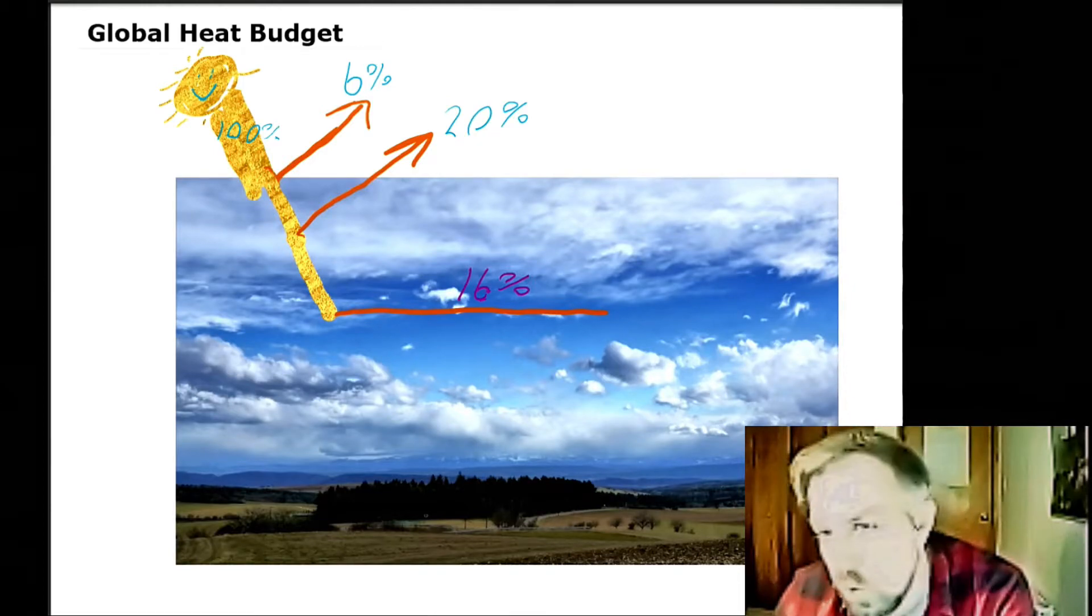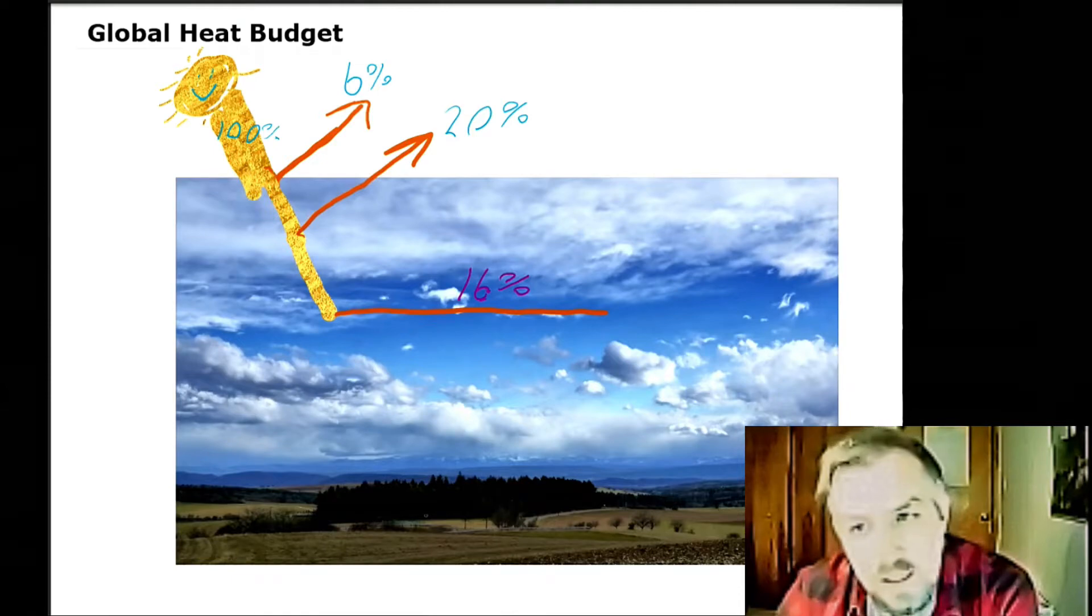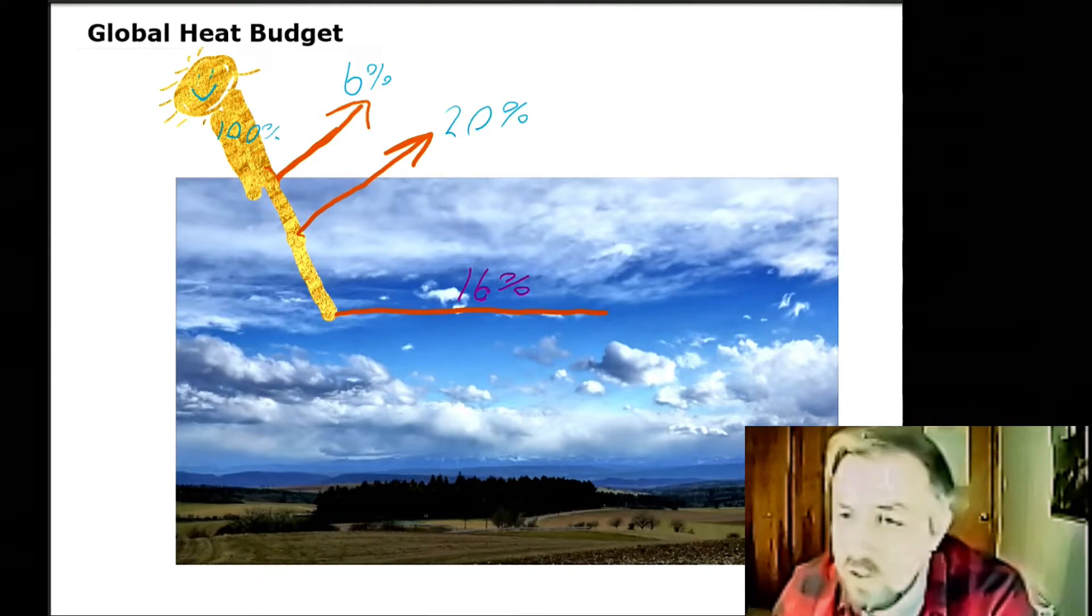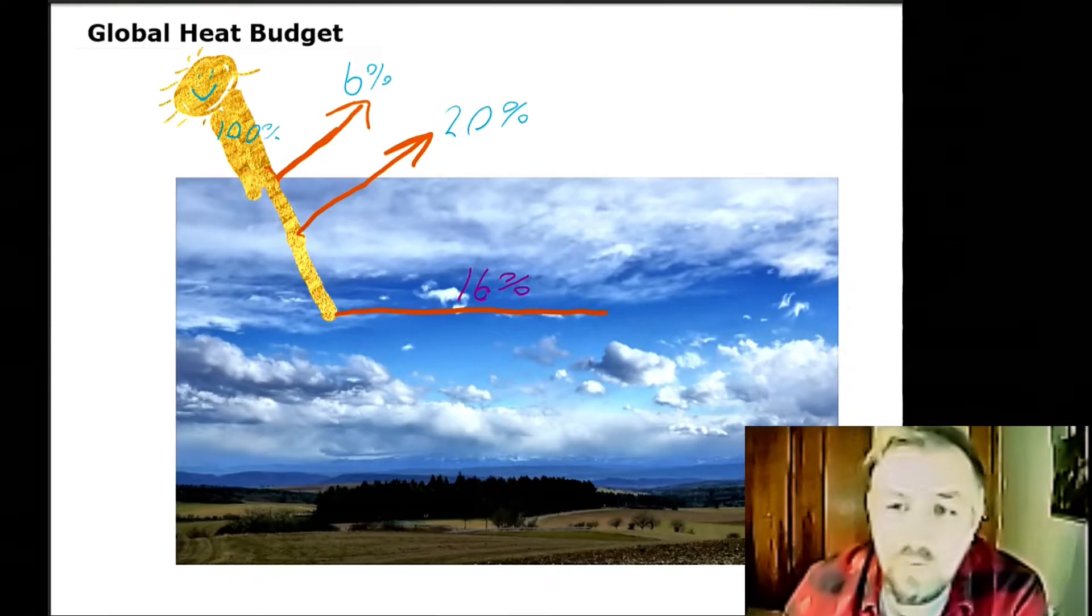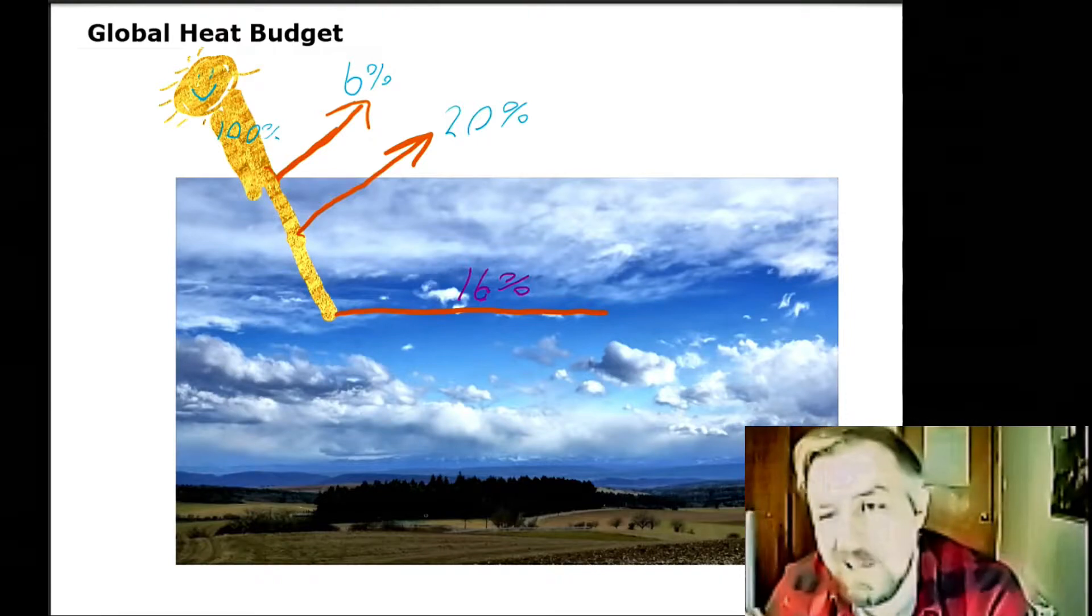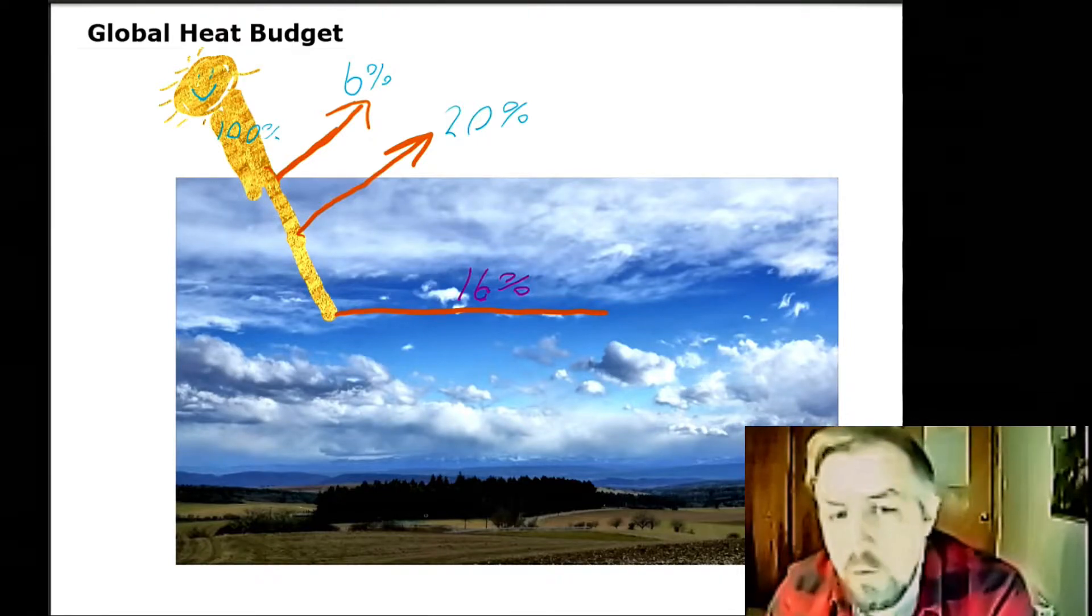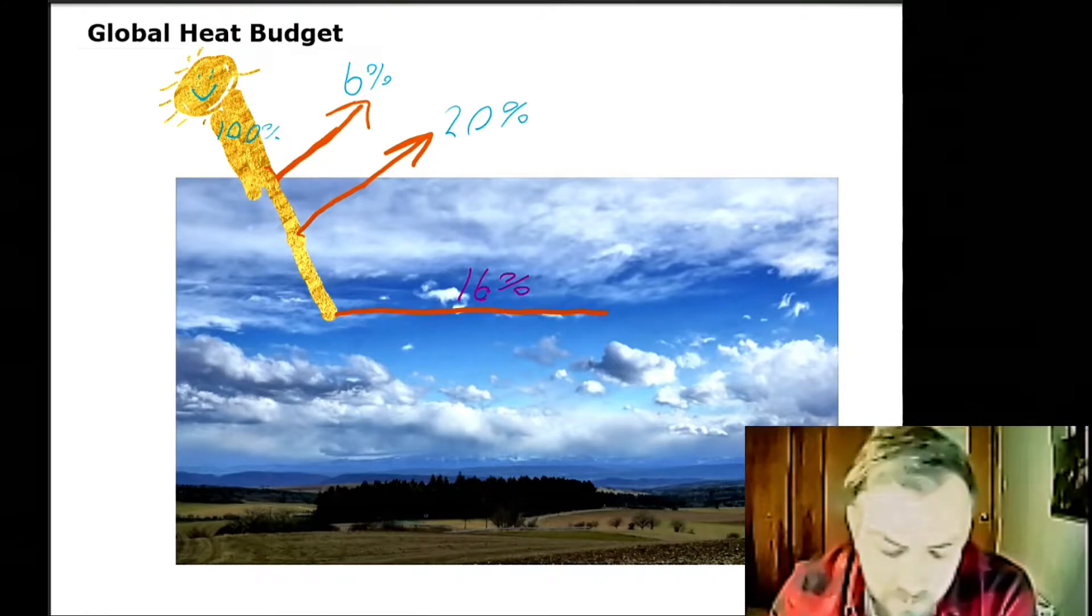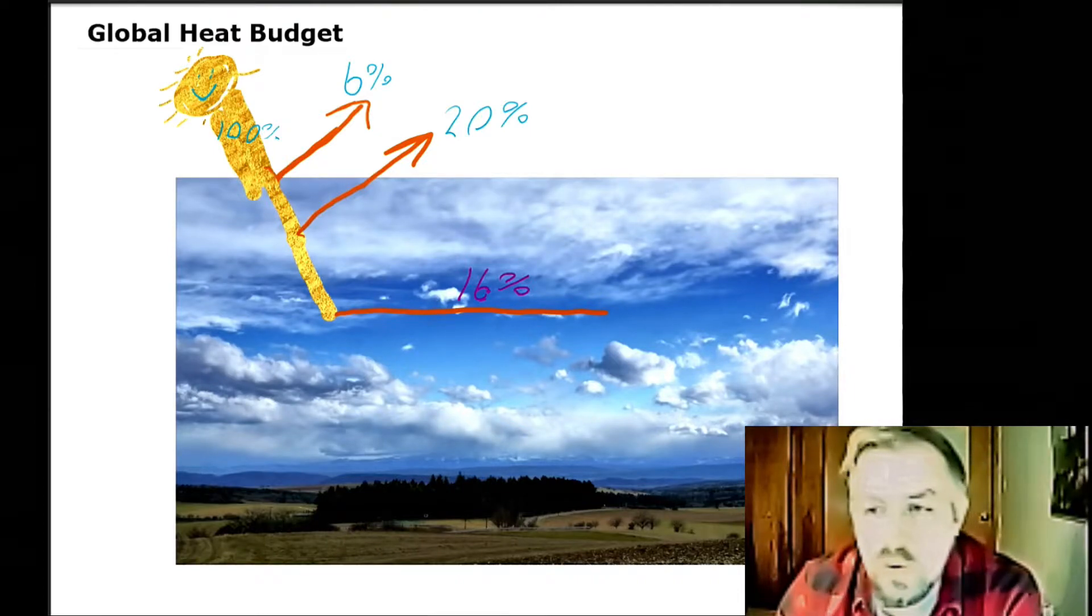So we are down to some quick maths. 6% in the atmosphere takes us down to 94%. 20% reflected by the clouds takes us down to 74%. 16% absorbed in the atmosphere takes us down to 58%.